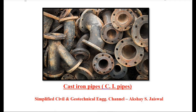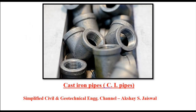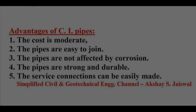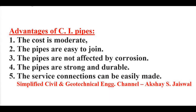Horizontal cast iron pipes are 100% stronger in tension and 50% stronger in rupture than vertical cast iron pipes. Advantages of CI pipes: the cost is moderate, the pipes are easy to join, they are not affected by corrosion, and the pipes are strong and durable.